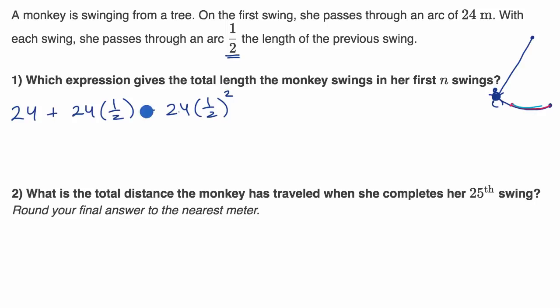And so this would be the first three swings. Notice that the exponent here, we got to the second power. So the first N swings, we are going to get to 24 times 1 half, not to the Nth power, but to the N minus one power.